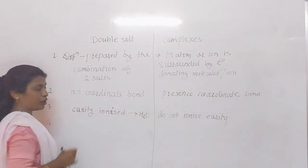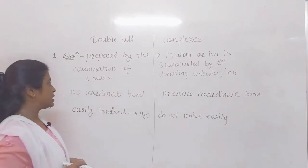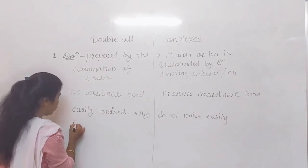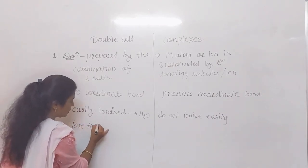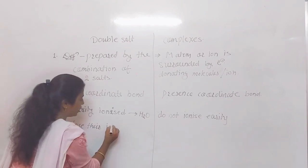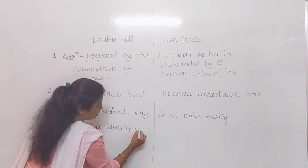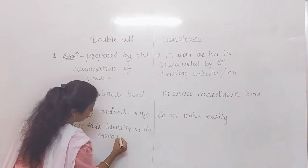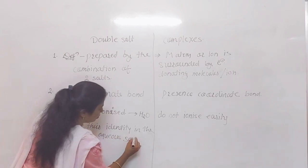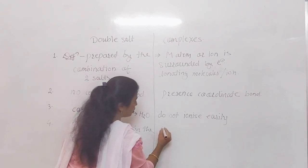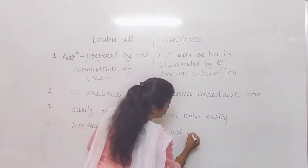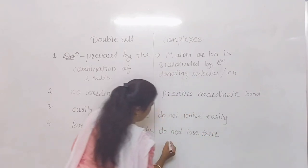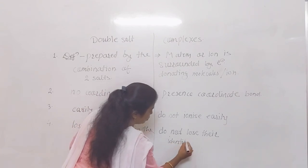Fourth point: double salts lose their identity in aqueous solution. But if we consider coordination compounds, they do not lose their identity. These are the distinguishing points between double salts and complexes.